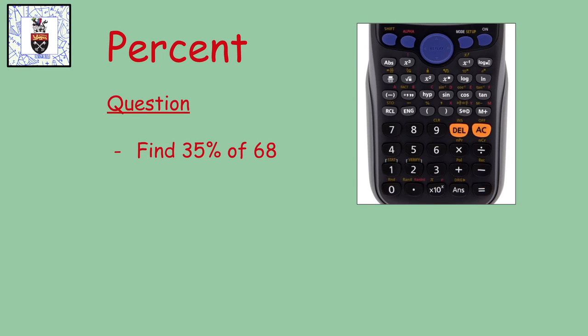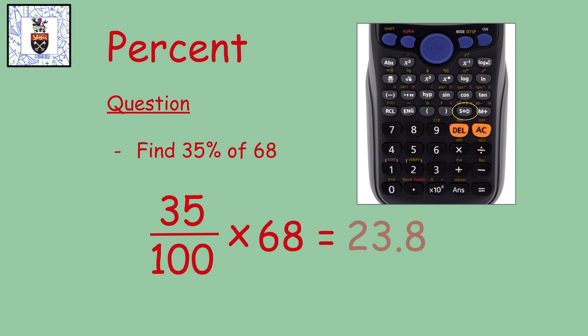Find 35 percent of 68: 35 per—you can use the fraction button or the divide button for that—100 multiplied by 68 equals. You'll probably be given a fraction on your calculator. Don't forget to press the SD button to turn it into a decimal: 23.8.